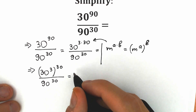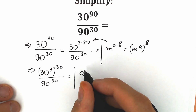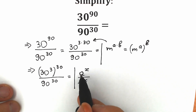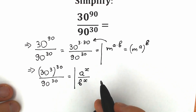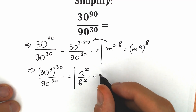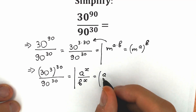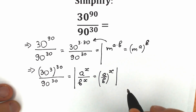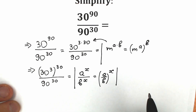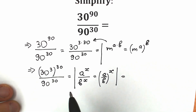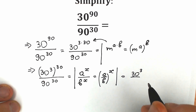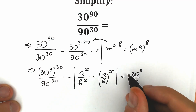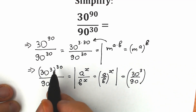Now another really great property: if we have a to the power x divided by b to the power x — different bases but the same power — we can write it in one parenthesis as (a over b) to the power x. Let's apply this rule here. We get 30 to the power 3, divided by 90, all raised to the power 30 — the common power, where x equals 30.